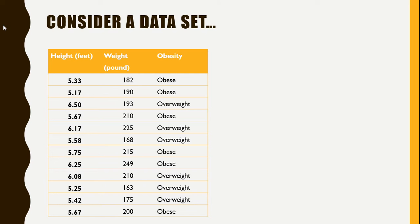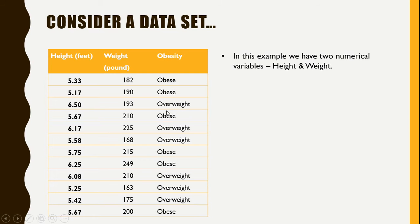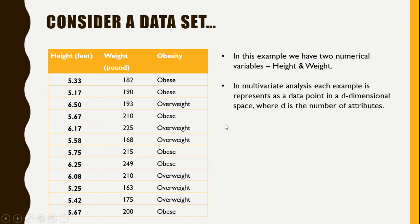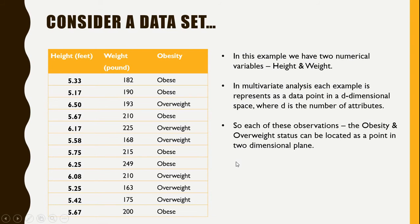Now consider a dataset. In this dataset we have the information of two numerical variables — height and weight — and each of these observations are labeled either obese or overweight. In multivariate analysis, each example is represented as a data point in d-dimensional space, where d is the number of attributes. Since we have height and weight, each observation can be represented as a point in the two-dimensional plane.